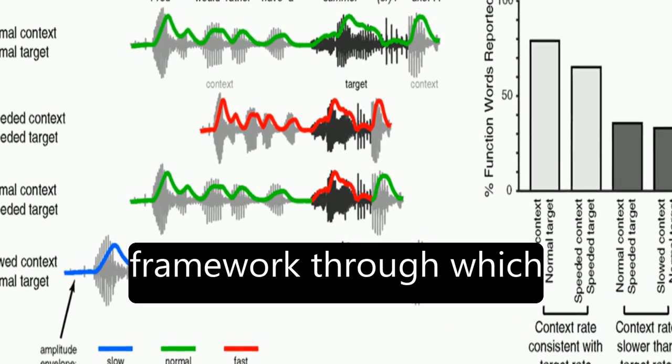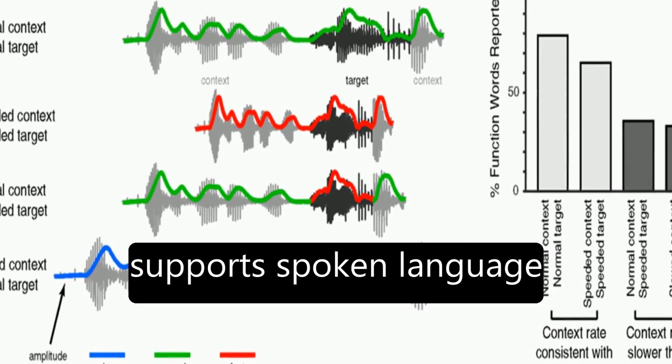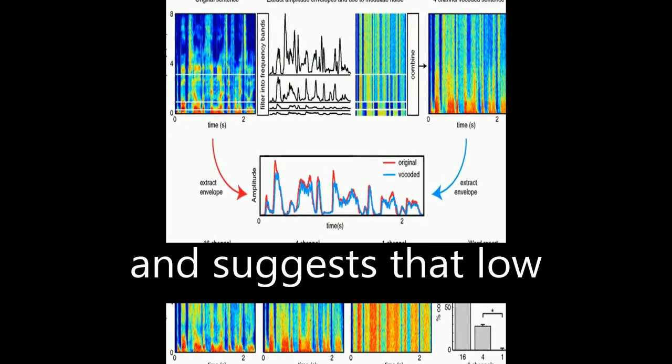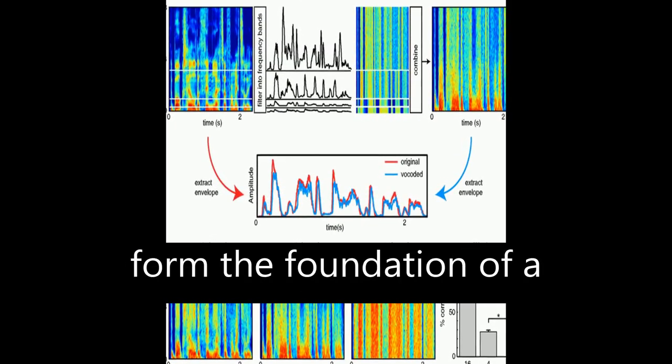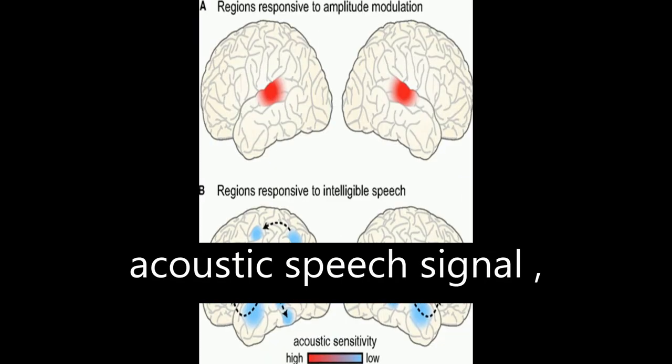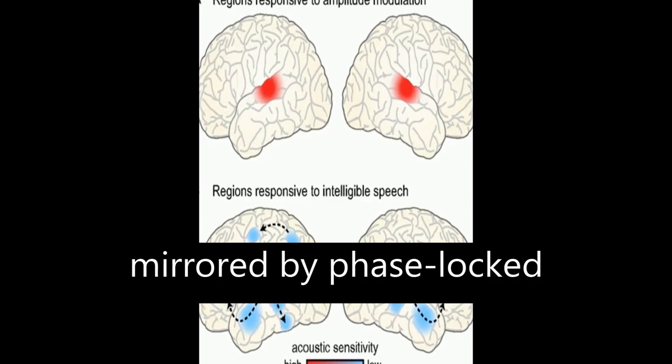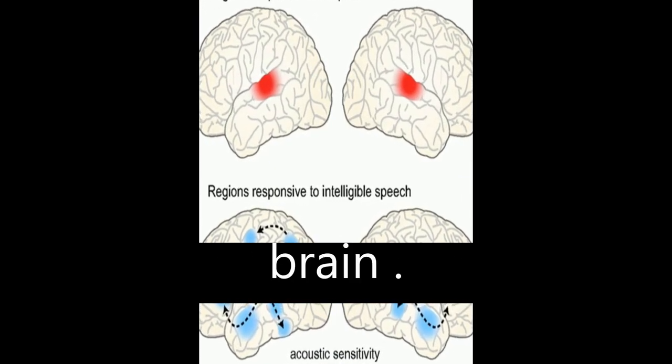The article proposes a framework through which this neural entrainment supports spoken language and suggests that low-frequency oscillations form the foundation of a rhythmic hierarchy in the acoustic speech signal, mirrored by phase-locked oscillations in the human brain.